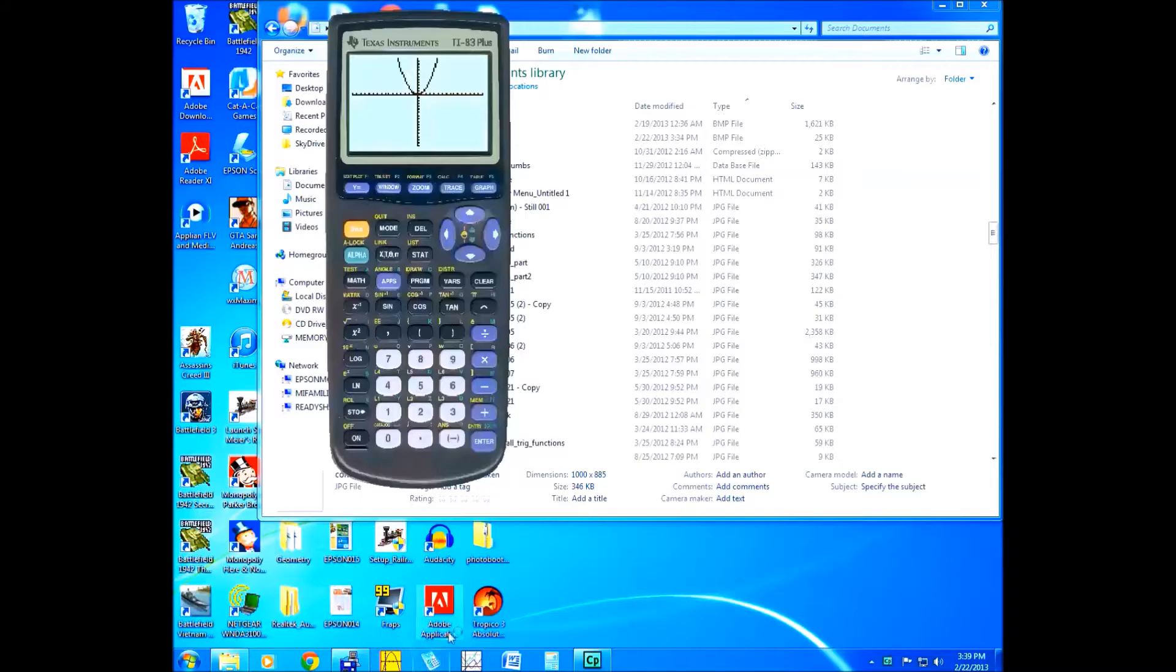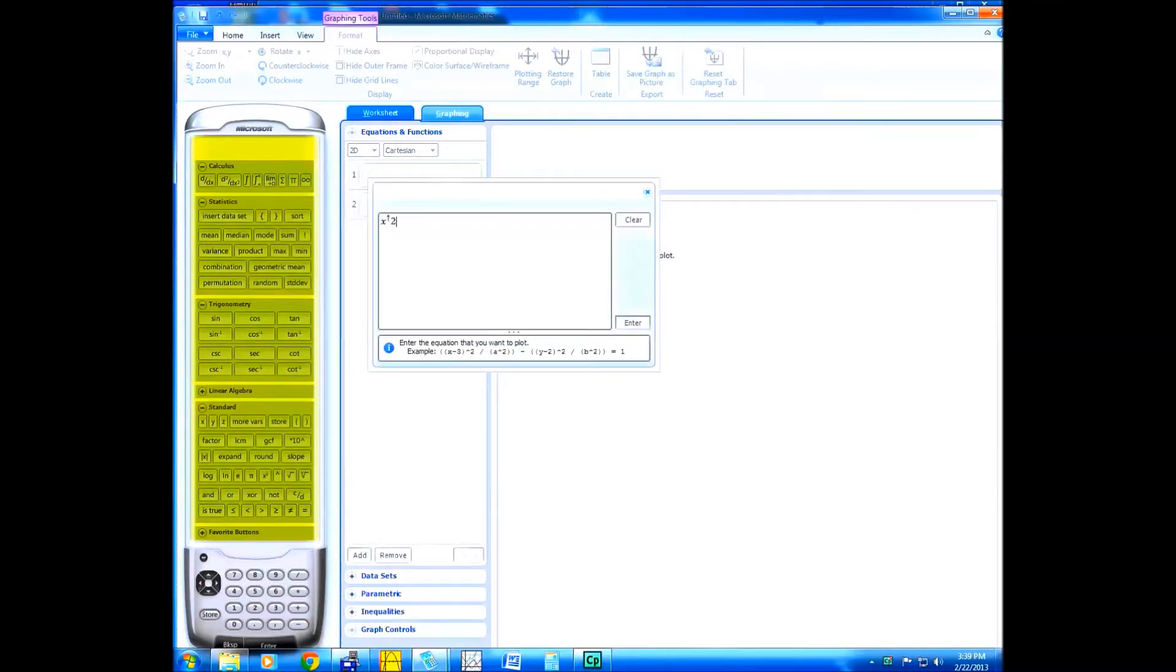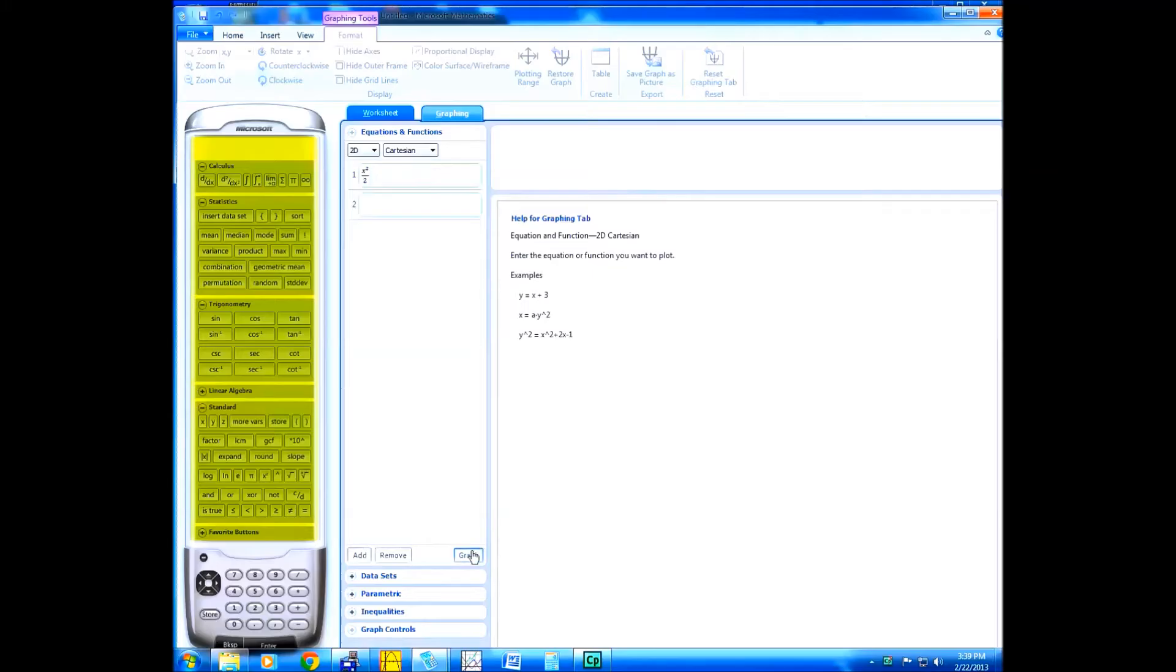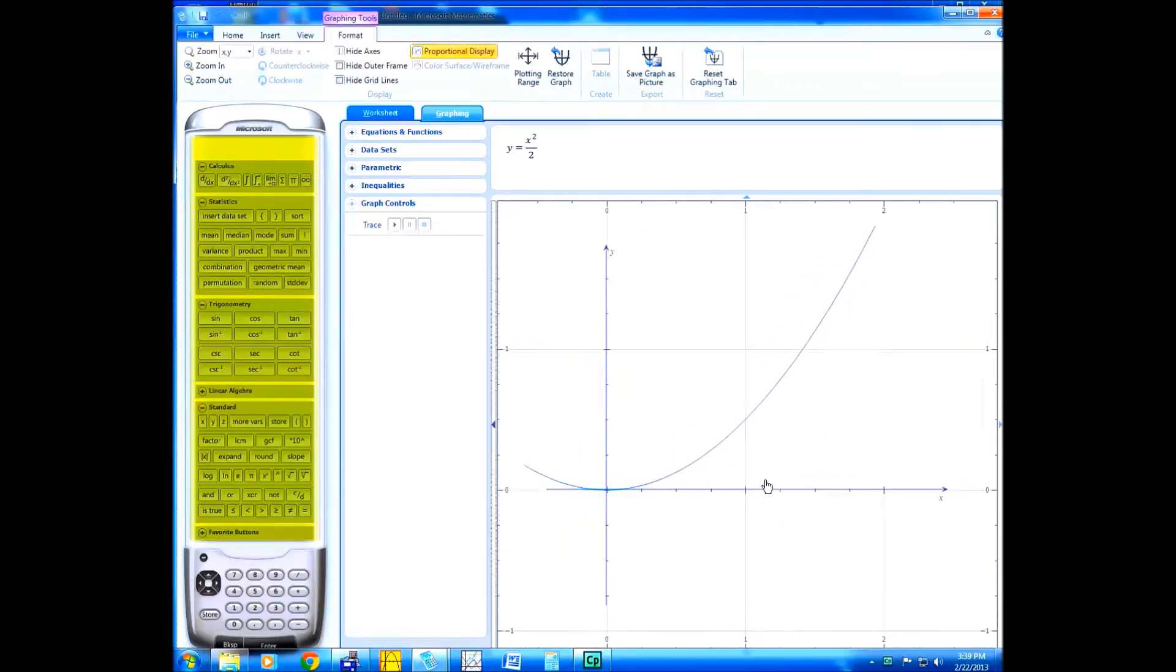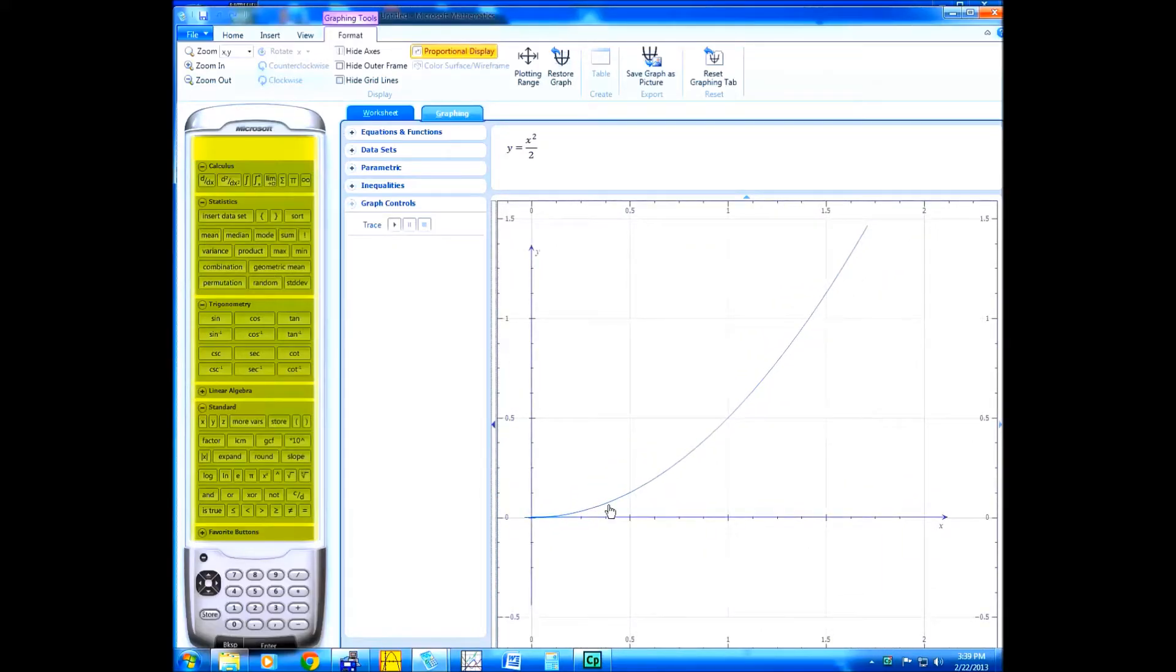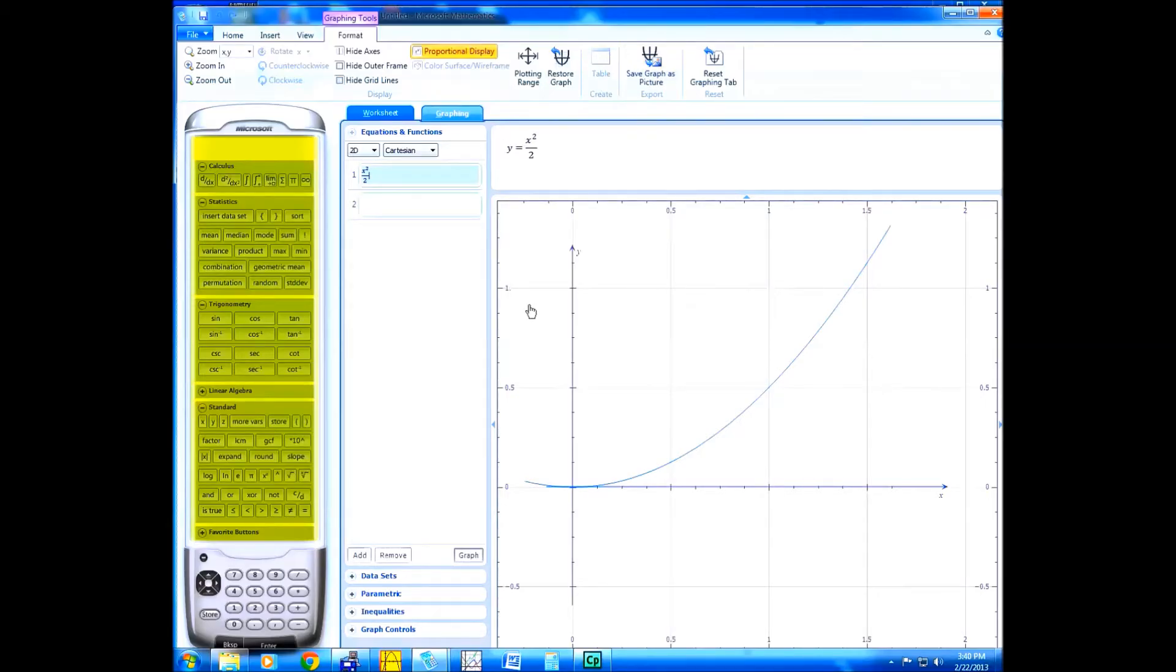Now we're going to graph the function x squared divided by 2. Here's the graph of x squared divided by 2. Now, let's take the tangent at 1. I know what the tangent line is. I know the equation but I won't tell you. I'll just show you the graph. And we'll figure out the slope by using the tangent of the angle at which the line intersects the x axis.